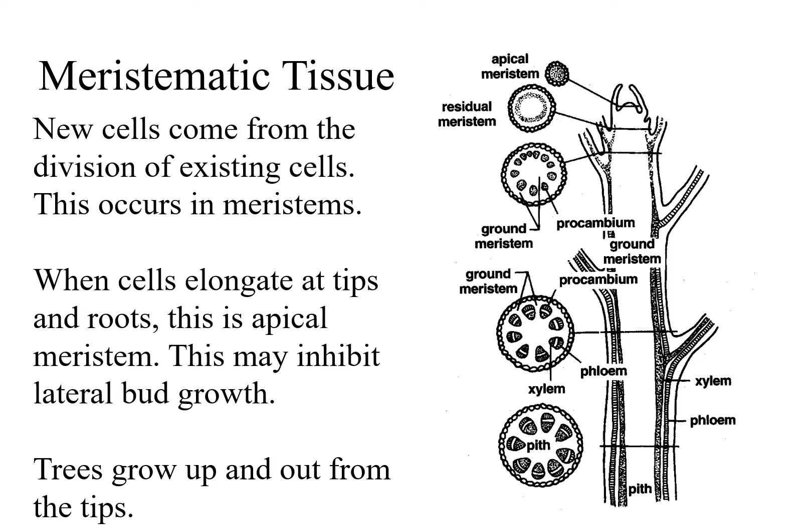Following division, cells undergo differentiation. This changes the structure and allows cells to assume specific functions. When cells elongate at tips and roots, this is at the point of the apical meristem. When lateral buds are inhibited by the active growth of the terminal buds, this is called apical dominance. Trees go up and out from the tips.